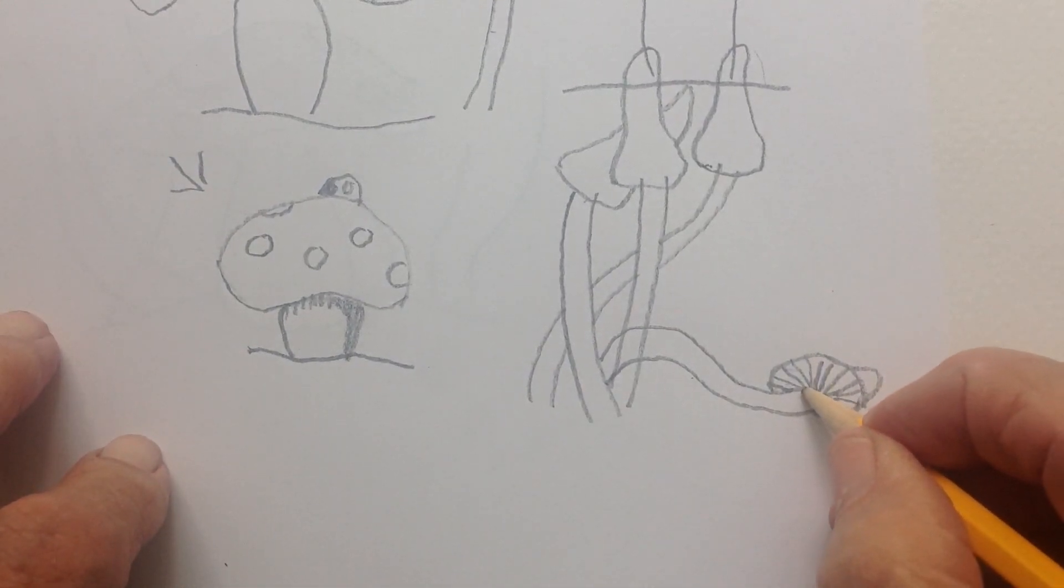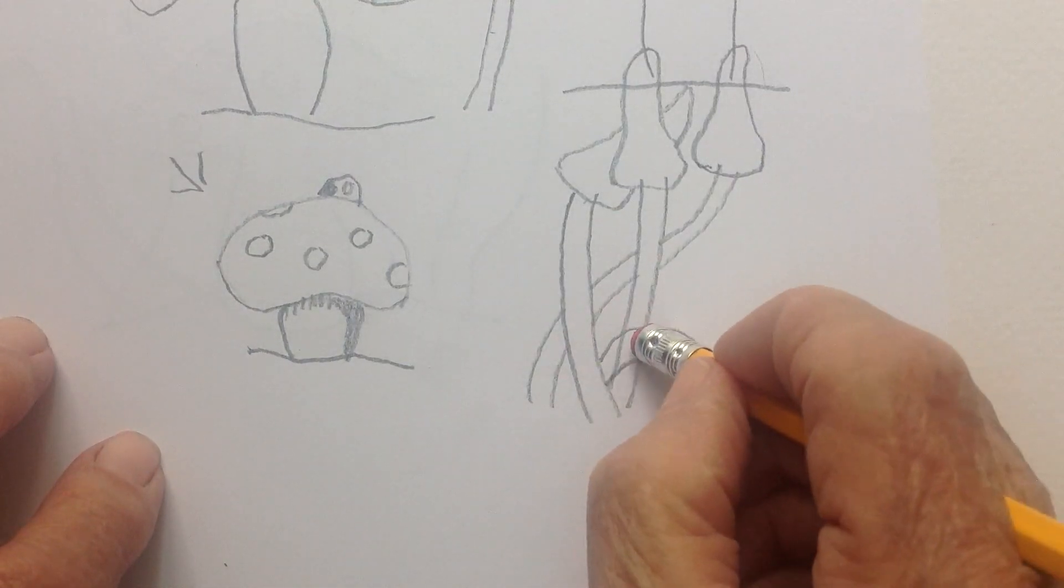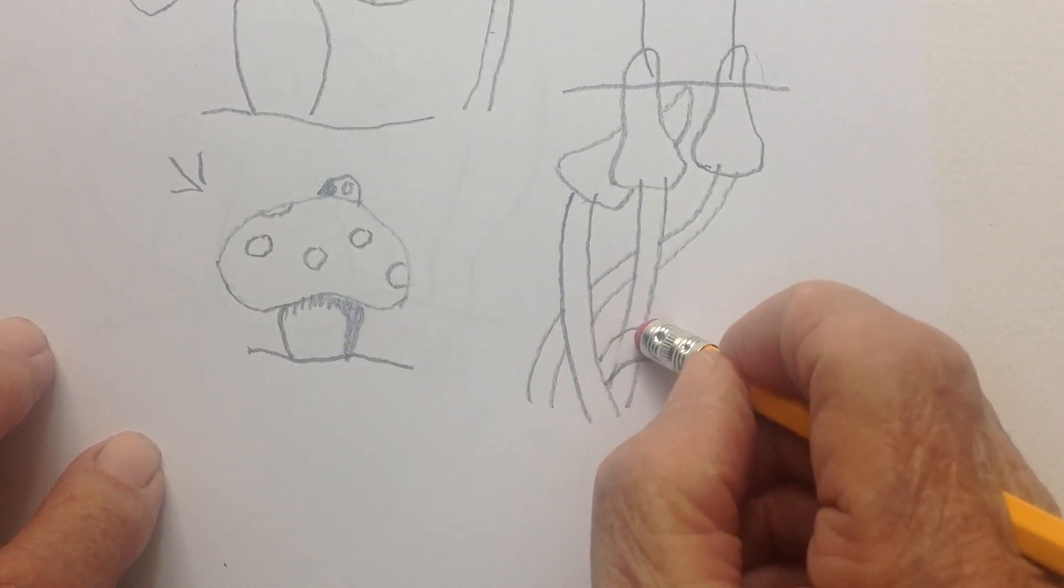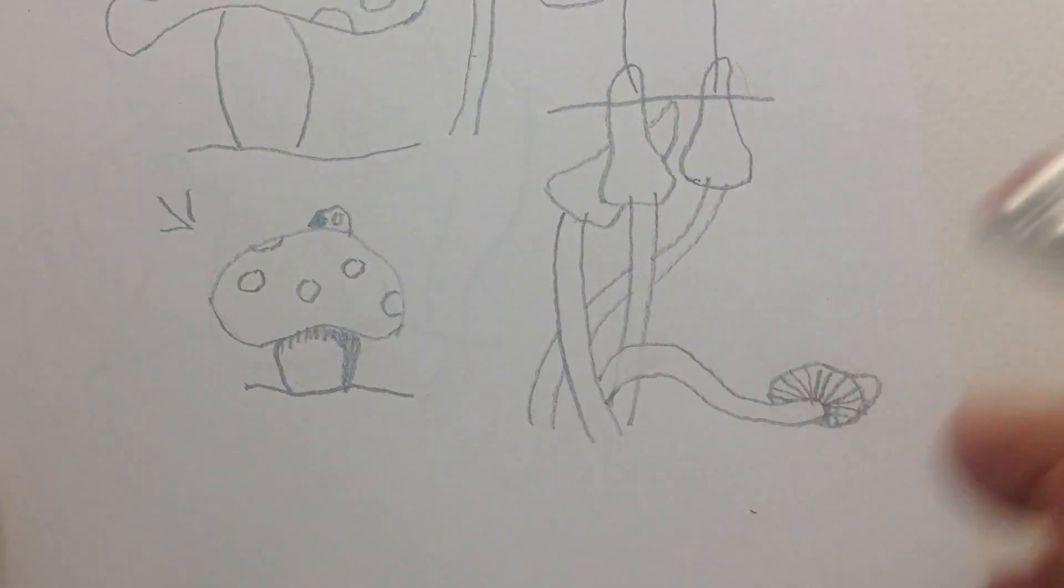And then I put a little bit around this here, there. So there you have it, and then you go in and you erase these lines that you don't need. Now you have a very interesting composition.